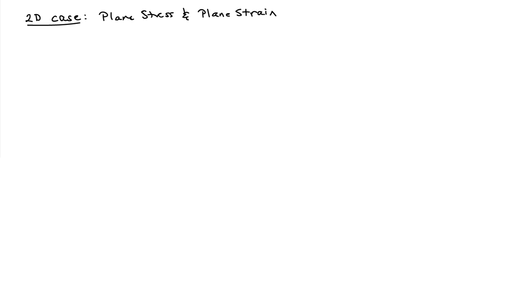At this point, what I'd like to do is have a look at the 2D case. When we did our accounting for the two-dimensional theory, we noticed that there were three missing equations. We've developed the six missing equations for the full 3D theory. I'd like to talk about what it means to have a two-dimensional problem. There are two special cases in 2D: plane stress and plane strain.